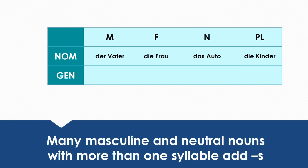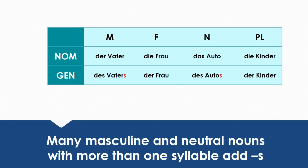Now let's take a look at how the genitive is formed, starting with definite articles. You already know the definite articles in the nominative case: 'der Vater' (the father), 'die Frau' (the woman), 'das Auto' (the car), 'die Kinder' (the children). The genitive forms would be: 'des Vaters' (of the father), 'der Frau' (of the woman), 'des Autos' (of the car), and 'der Kinder' (of the children). So you can see that 'der' changes to 'des' in the masculine, 'die' changes to 'der' in the feminine, 'das' changes to 'des' in the neutral, and 'die' changes to 'der' in the plural.